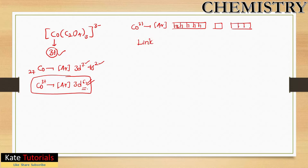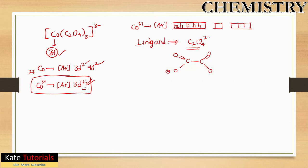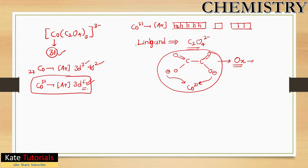Now, the ligand here is oxalate, C₂O₄²⁻. Its structure has two carbons with double-bonded oxygens, and the negatively charged oxygens coordinate to cobalt. This makes oxalate a bidentate ligand — sometimes written as 'ox'. Oxalate is normally a weak field ligand, and weak field ligands typically form outer orbital complexes.